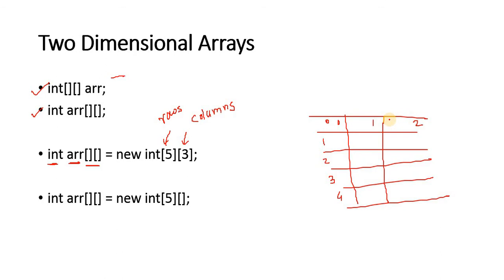We can create the array with an optional number of columns. The array can consist of five rows and we can decide the number of columns in each row later on.